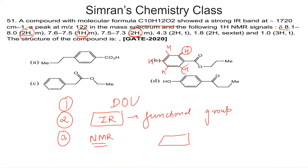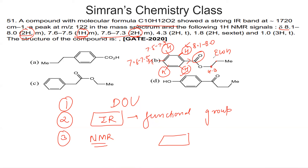The two ortho hydrogens give signals at 8.1–8.0 because the electron-withdrawing group reduces electron density, increasing the chemical shift. The one para hydrogen corresponds to 7.6–7.5 and the two meta hydrogens to 7.5–7.3. The aliphatic signals at 4.3, 1.8, and 1.0 can all be explained. That's it for this question. Let's move to the next.